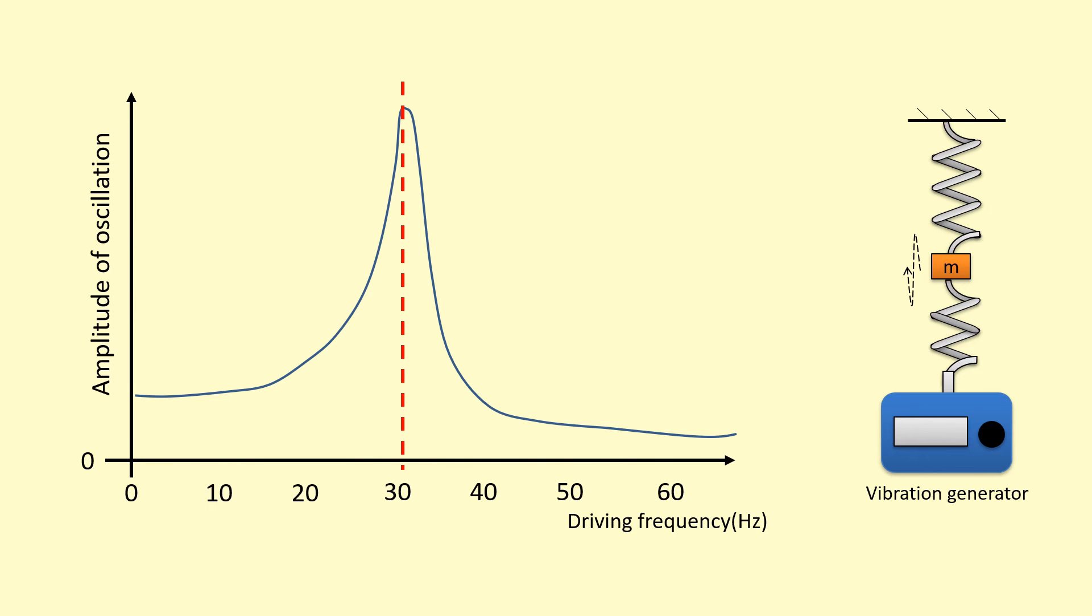Next, what I'm going to do is join a disk like this to that mass. This disk has a large surface area, so it's going to have a lot of air resistance acting on it, so this is going to add some damping to the system. And I'm going to redo this experiment and look at how the amplitude changes at different frequencies.